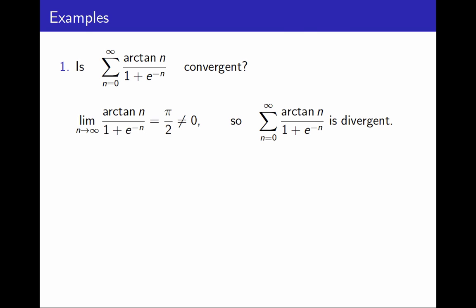Here are some concrete examples. Let's say I look at the sum from n equals 0 to infinity of arctan(n) over 1 plus e to the minus n, and I want to know whether it is convergent. Well, I'm going to try to use this theorem. I compute the limit as n goes to infinity of the general term. Now, the limit of the numerator is π over 2. The limit of the denominator is 1 plus 0, so overall I get π over 2. π over 2 is not 0, so the series is divergent. Done! I don't have to do anything else. I don't have to look at the definition. I know this series is divergent. It doesn't represent a number. I can move on.